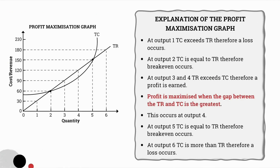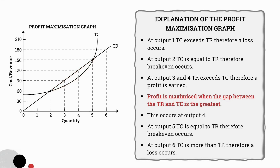Now with a neatly typed summary, let's go through it again. At output 1, total costs exceed total revenue, therefore a loss occurs. At quantity 2, total cost equals total revenue, therefore break-even occurs. At quantities 3 and 4, total costs lie below total revenue and a profit has been earned. At quantity 4 specifically, the gap between total cost and total revenue is the widest — that is when profit is maximized. At quantity 5, total cost equals total revenue, which is again break-even. At quantity 6, total costs lie above total revenue, so a loss occurs.